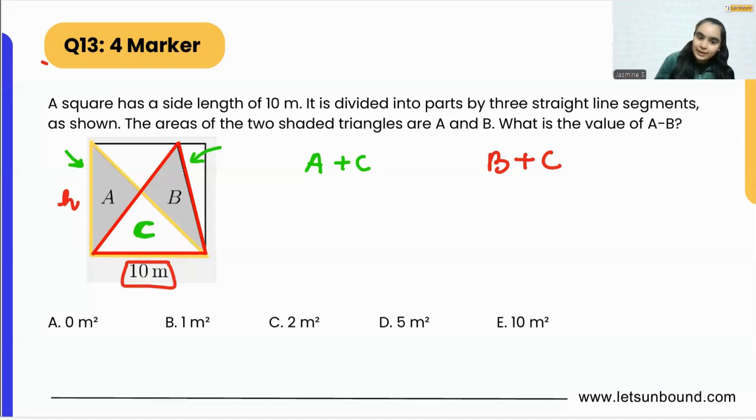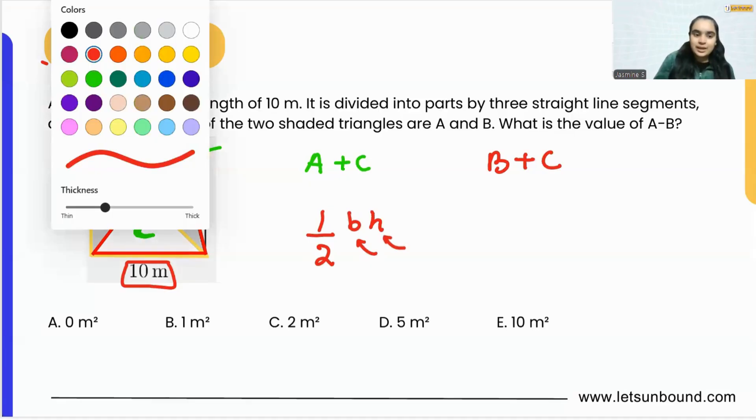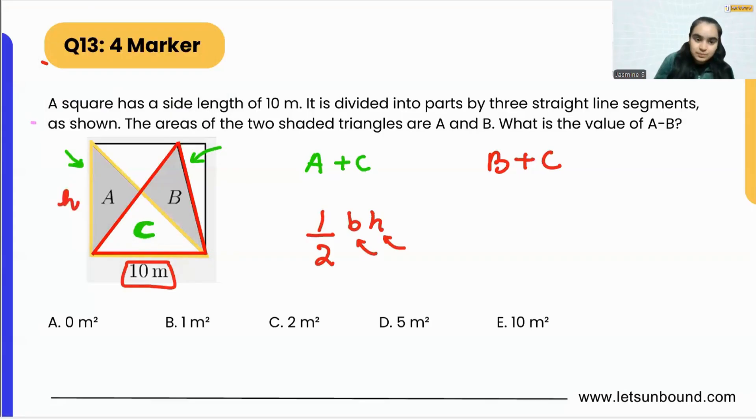We know to find out the area of A plus C, which is a triangle, it is going to be half times base times height. We know base is 10 and height is 10. If we look at another part, B plus C, it also has base 10 and height 10.